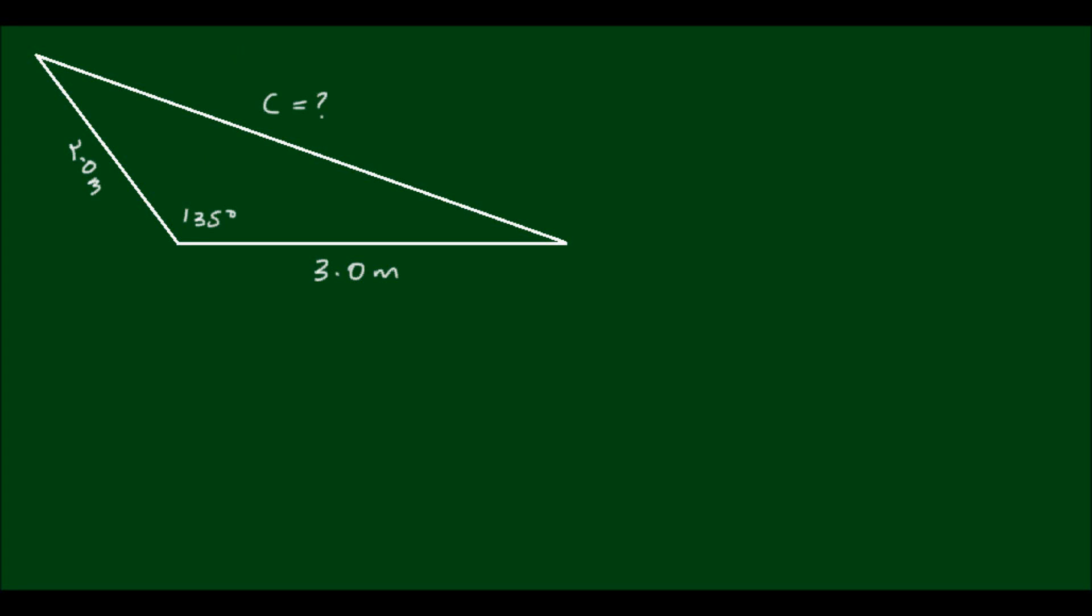Suppose I have a scalene triangle with one side equal to 3 meters, another side equal to 2 meters, and the angle between the two known sides is 135 degrees. I want to find the long side C.